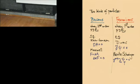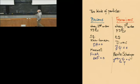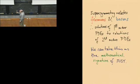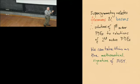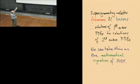Supersymmetry is a Lie superalgebra — a symmetry that relates bosons and fermions. In some sense it relates solutions of first-order PDEs to solutions of second-order PDEs. You can write down field theories containing both bosonic and fermionic fields, and if you have a fermionic field obeying the Dirac equation and you do a supersymmetry variation, you get a bosonic field satisfying a second-order equation. So in mathematics, every time a first-order PDE implies a second-order PDE, there is some supersymmetry underlying that.